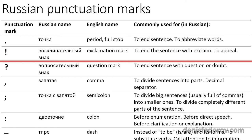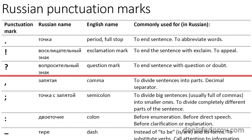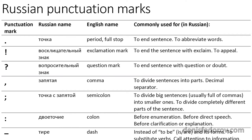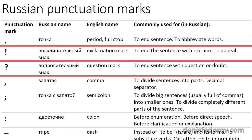Exclamation mark — we call it восклицательный знак in Russian — is used to indicate strong feelings or high volume at the end of the sentence, so in Russian we use it the same as in English. Question mark — вопросительный знак in Russian — is used for questions and interrogative phrases at the end of the sentence, exactly the same as in English. So exclamation mark, question mark, and period all end the sentence — in Russian we use them exactly the same as in English.